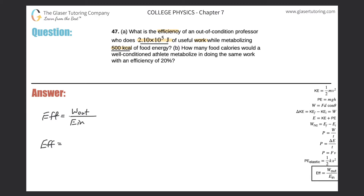What I'm saying is if I put 2.1 times 10 to the 5 joules in the numerator, I need my energy value that went into the system also in joules in the denominator. It's probably just good practice to always convert things to joules, because in other formulas like power formulas, the work has to be in terms of joules. So let's take the 500 kilocalorie value and convert that into joules.